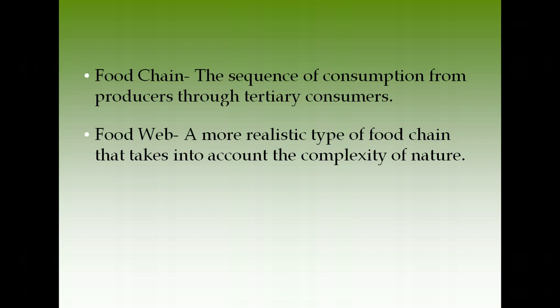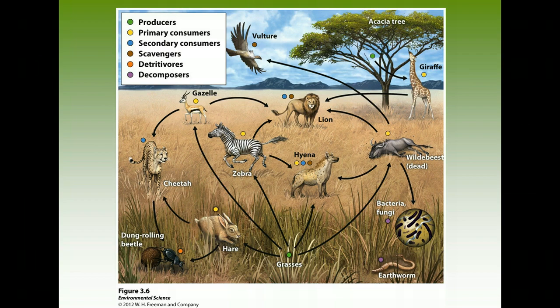A food chain is a sequence of consumption from producers through tertiary consumers. In reality, it doesn't follow one line, so we have food webs — many interacting food chains. In a terrestrial food web, some organisms have more than one role; for example, lions are both secondary consumers and scavengers, feeding on dead animals as well.